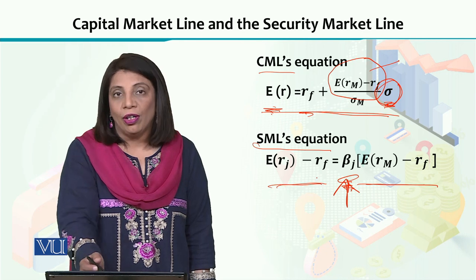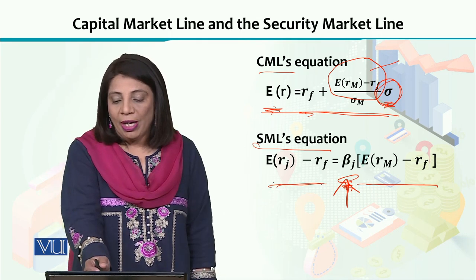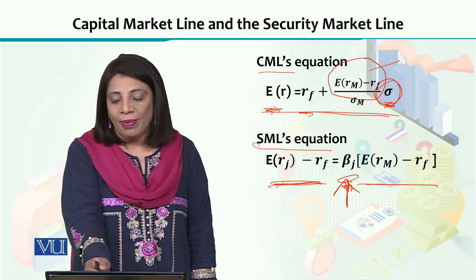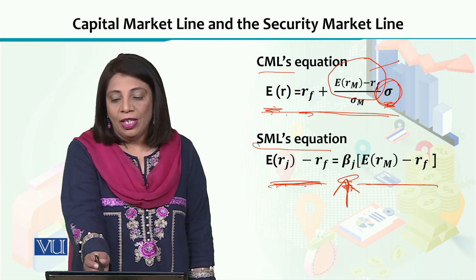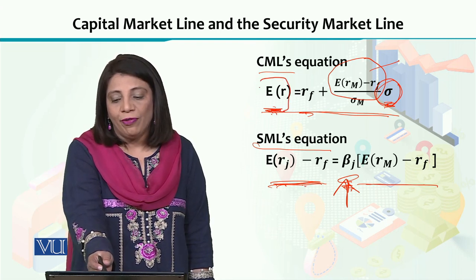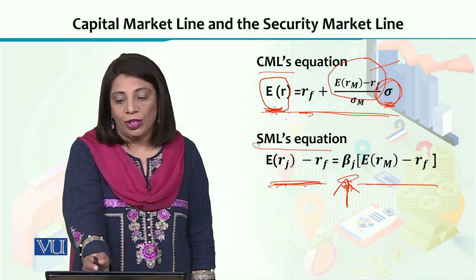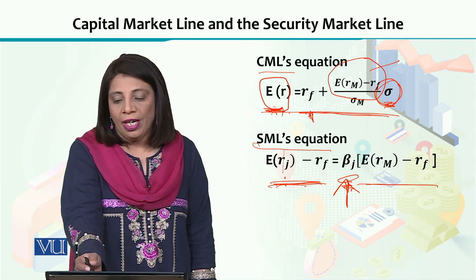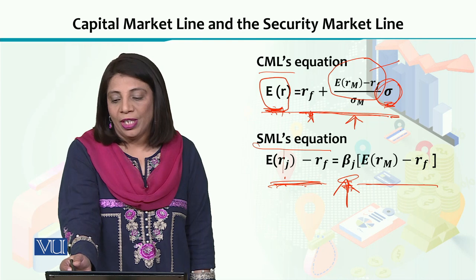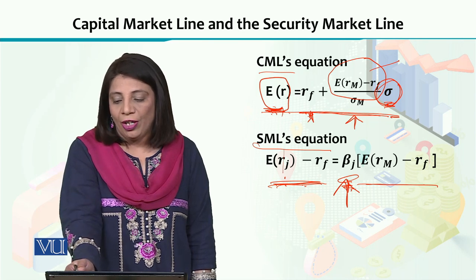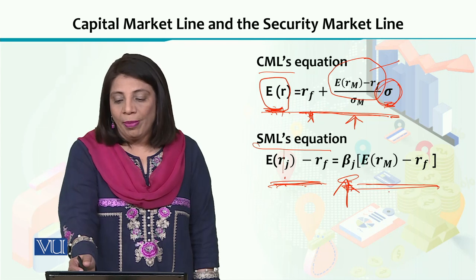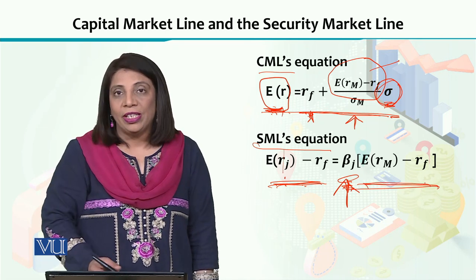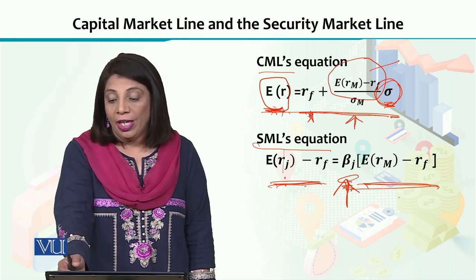For the security market line, the vertical axis (Y-axis) represents the return on the fund, whereas for the capital market line it represents the expected rate of return. Another difference is that the capital market line has an intercept and its slope is a function of sigma, while the security market line has no intercept and its slope is beta, which assesses risk, along with a multiplicative term giving information about the risk premium.